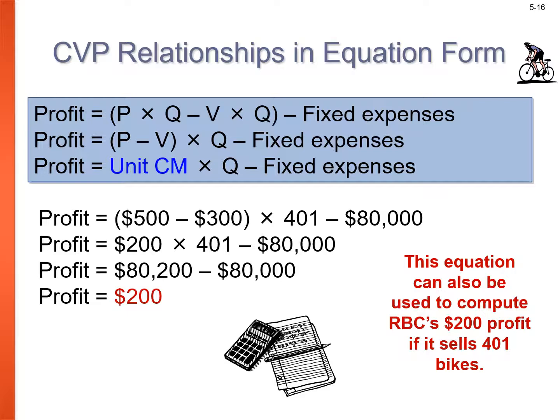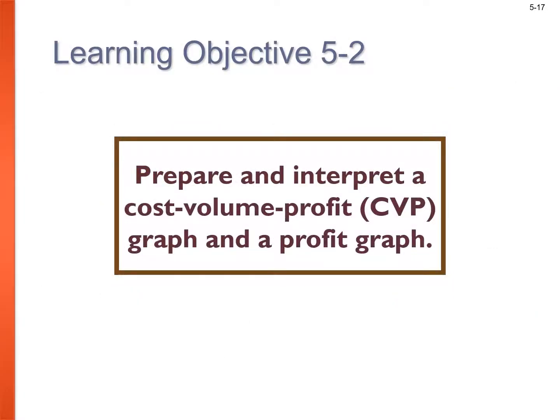So profit equals the unit contribution margin of $200 times quantity sold of 401, minus the $80,000 in fixed expenses — an even quicker approach. We're refining the income statement into equations, and still arrive at the same profit. That completes our first objective.